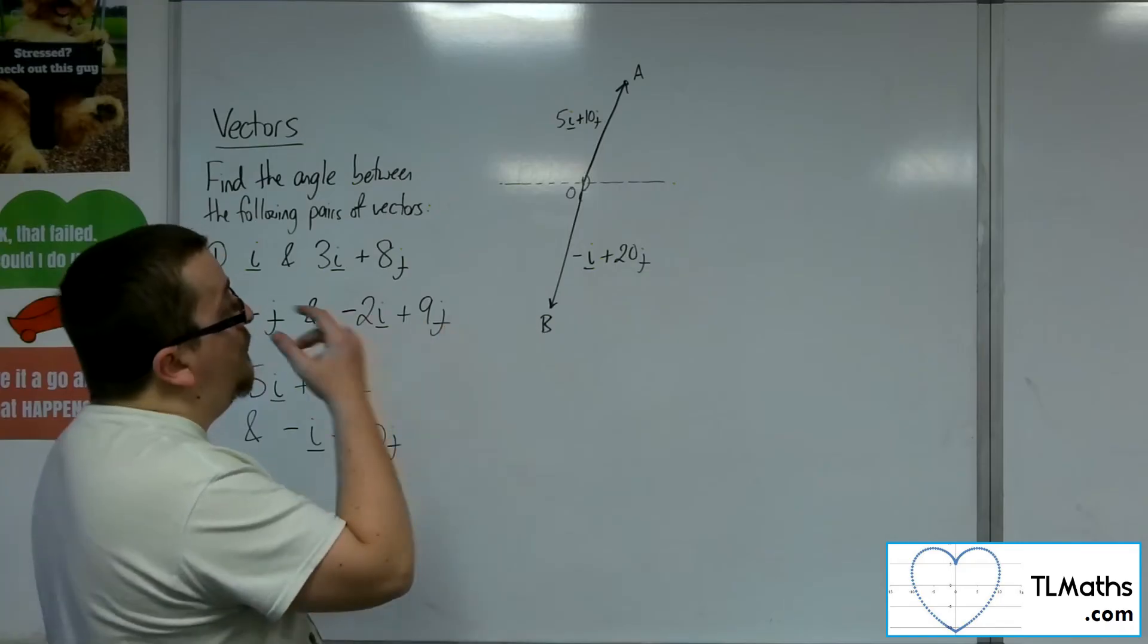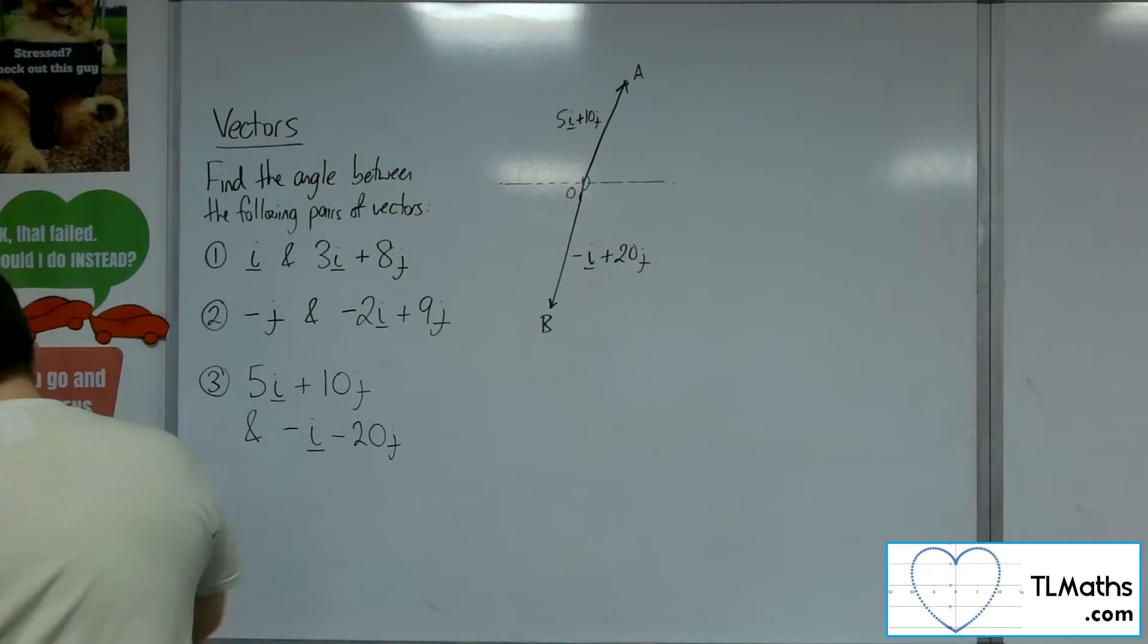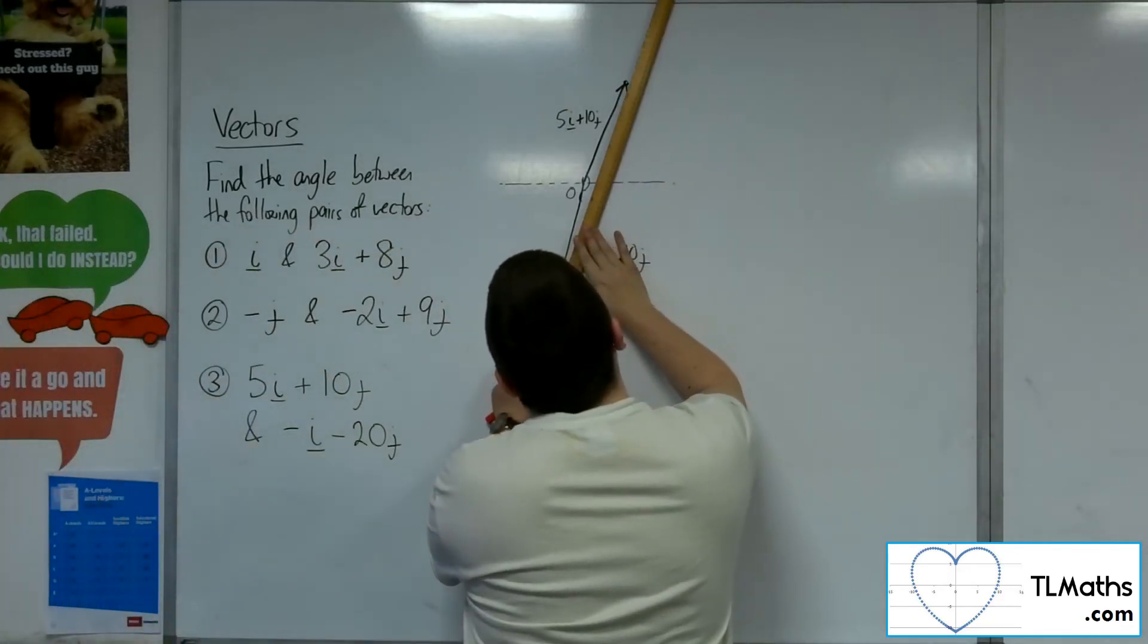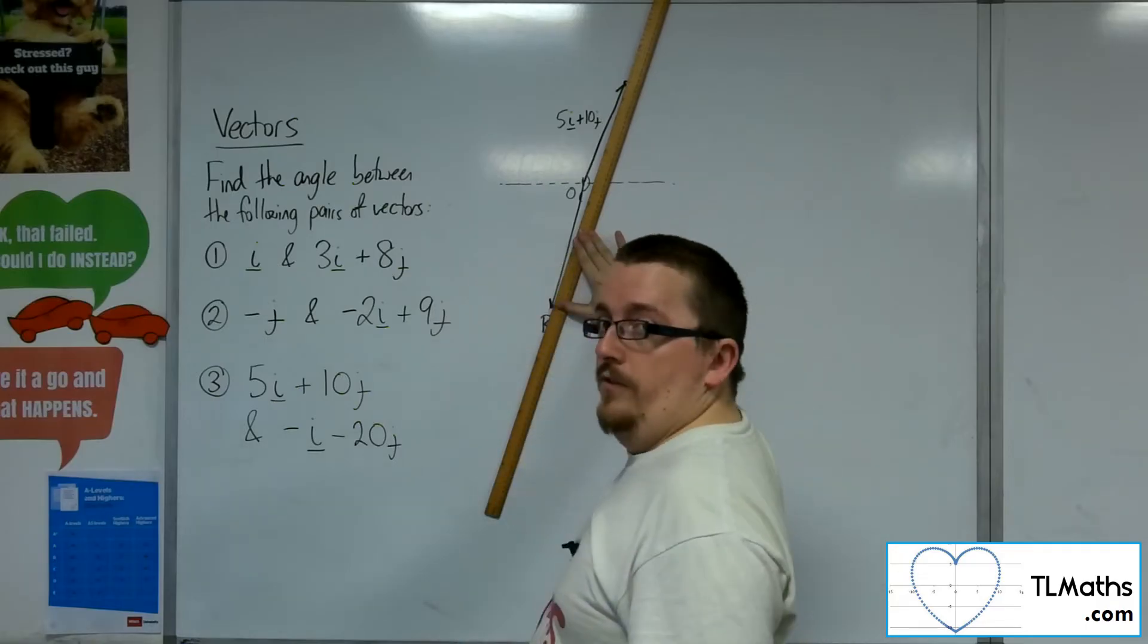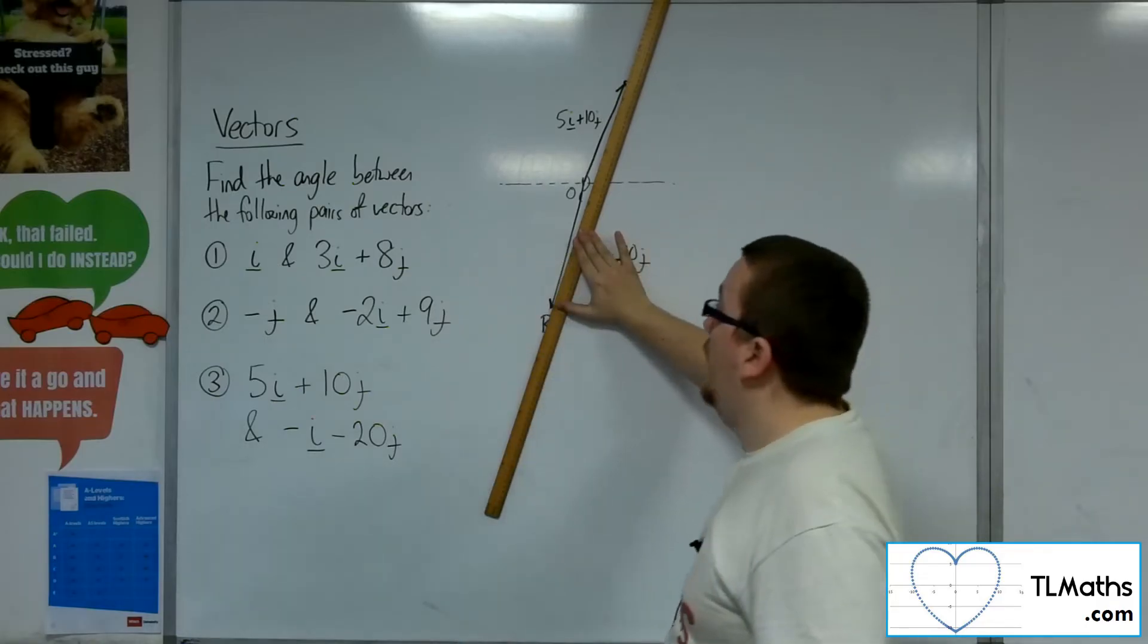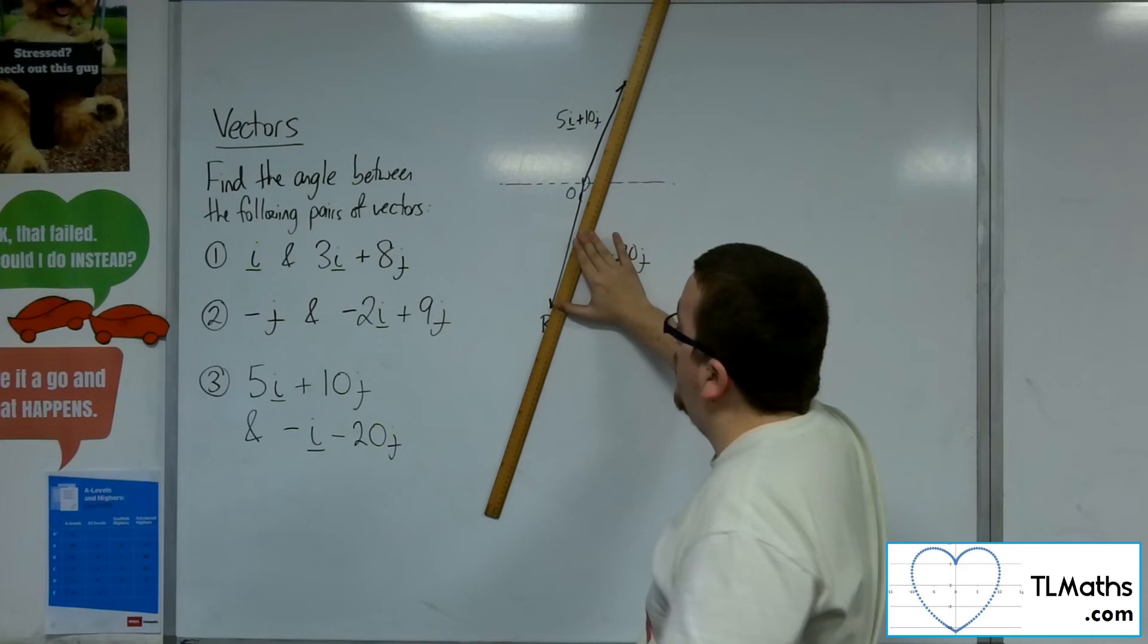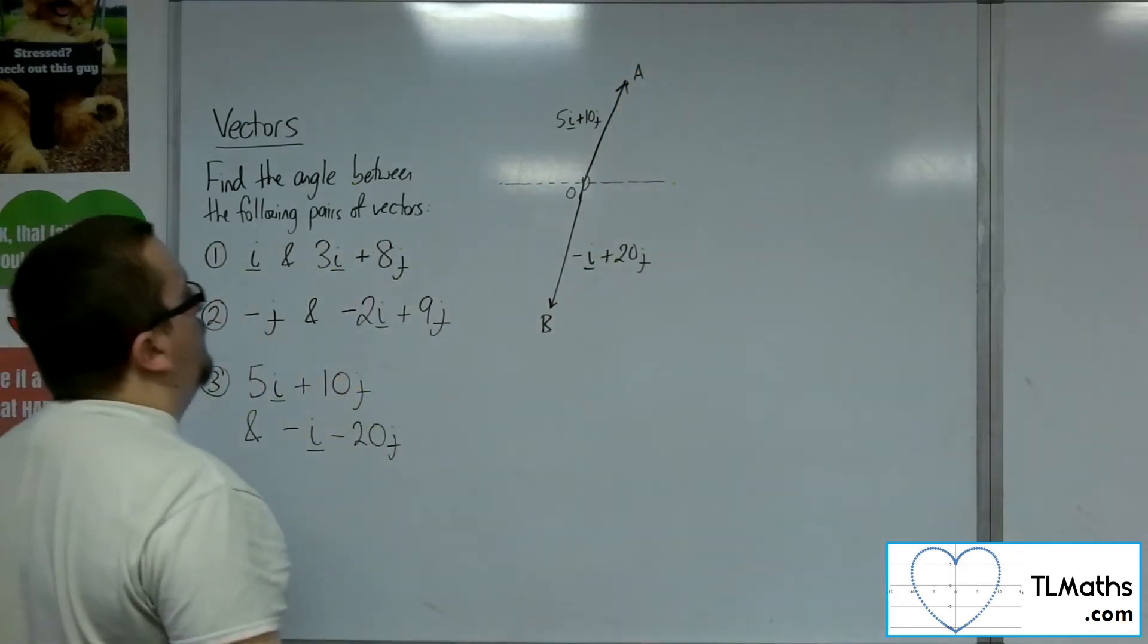So from here on, we've got two options. Now, we could turn this into a triangle and find the length of AB, which shouldn't be too difficult to do. Find the length of three vectors, use the cosine rule to find that angle.